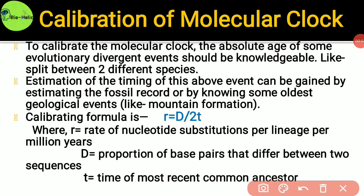The calibration of molecular clock: to calibrate the molecular clock, the absolute age of some evolutionary divergent events should be known, like the split between two different species. Estimation of the timing of such events can be gained from the fossil record or by knowing geological events like mountain formation or river formation. The calibrating formula is: r = D / (2t), where r is the rate of nucleotide substitutions per lineage per million years, D is the proportion of base pairs in DNA that differ between two sequences, and t is the time of the most recent common ancestor.